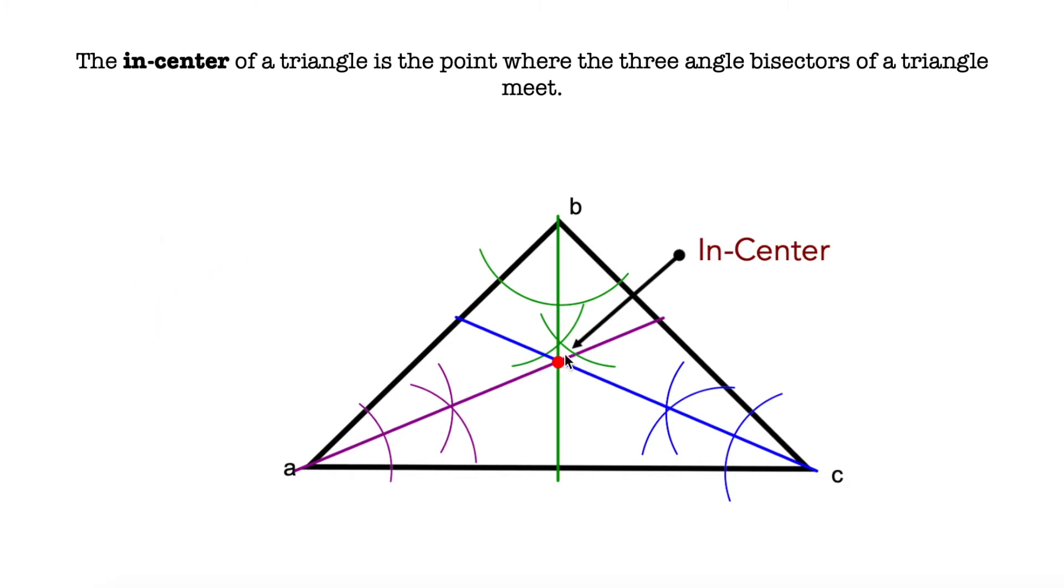See, in here we have the angle bisectors of the three angles of this triangle A, B and C, and they will meet in this point which is the incenter.